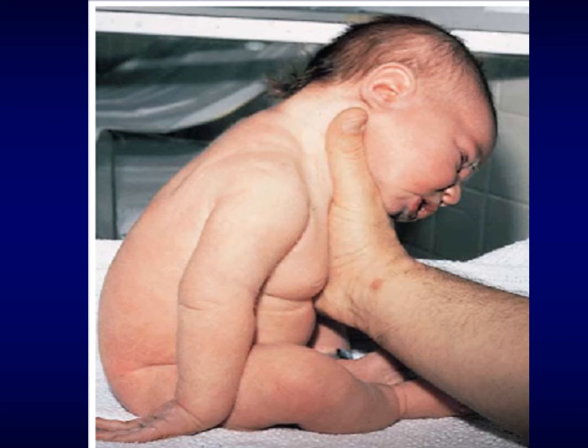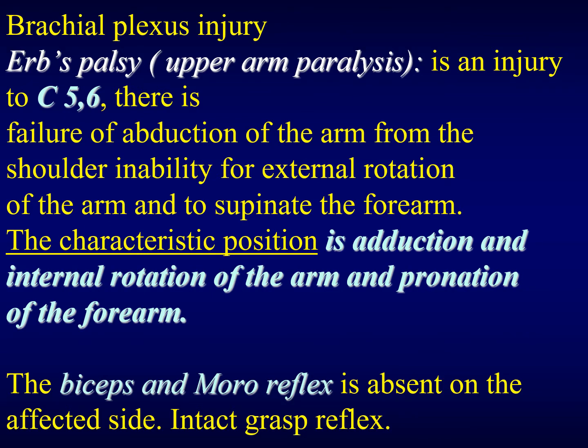Looking at this baby, we find the position of his arm. The brachial plexus injury is either Erb's palsy, or complete paralysis of the whole arm. Erb's palsy happens when there is an injury of the cervical roots C5 and C6. There is failure of abduction of the arm and inability to supinate the forearm. The characteristic position of that arm is that it is adducted, internally rotated, and pronated.